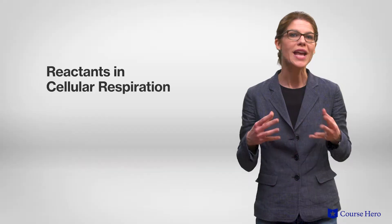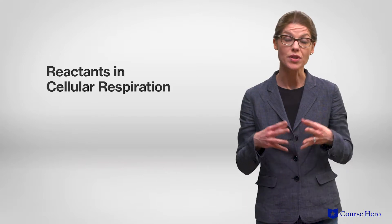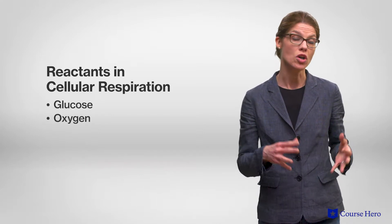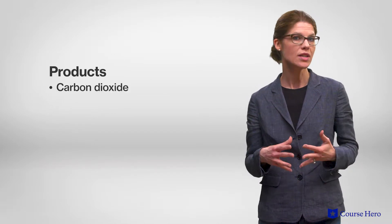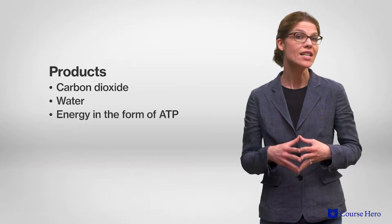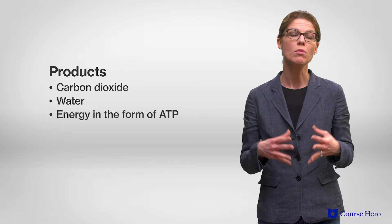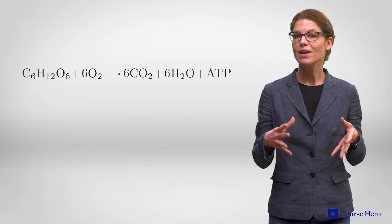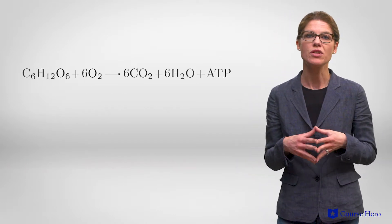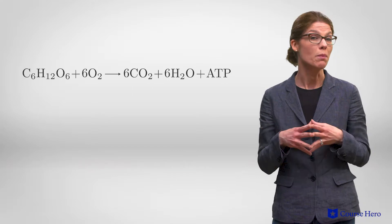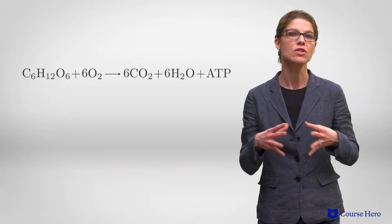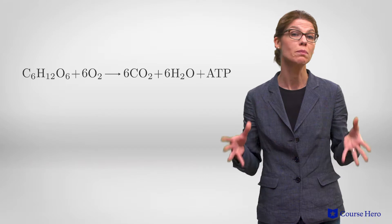The reactants in the general equation for cellular respiration are glucose and oxygen, and the products are carbon dioxide, water, and energy in the form of ATP. Although the chemical equation for cellular respiration does not seem complex, there are multiple processes required for this reaction to proceed to completion.